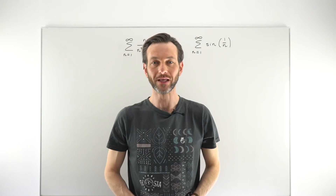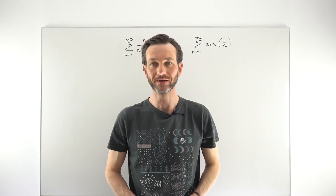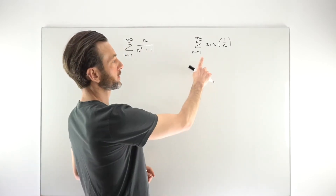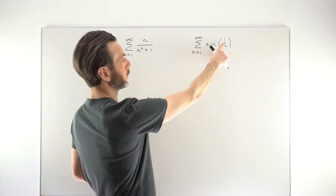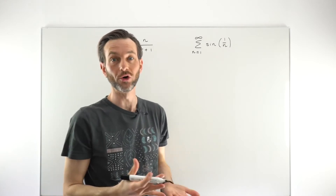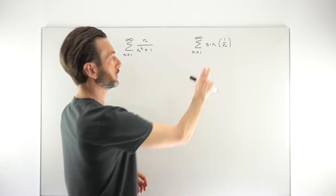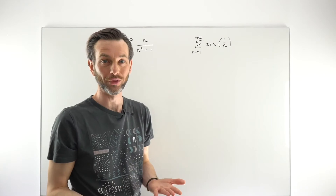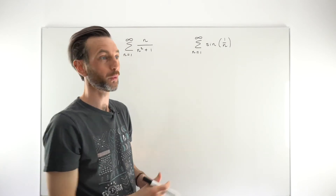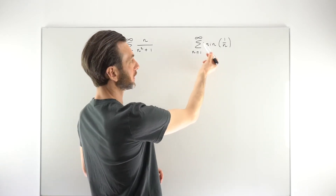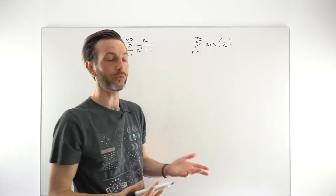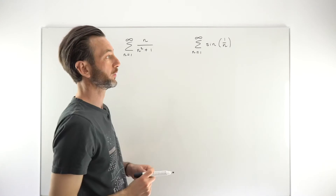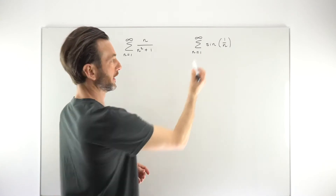In this video, we're going to look at an example of the limit comparison test. We're going to use this test to check whether the series from n equals 1 to infinity of sine(1/n) converges or diverges. Now sine(1/n) is not a common function we're easily familiar with, so whether the infinite series based on this function converges or diverges is not immediately obvious just by looking at it.